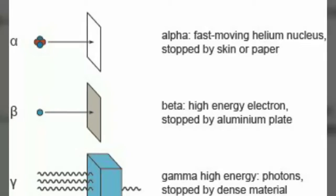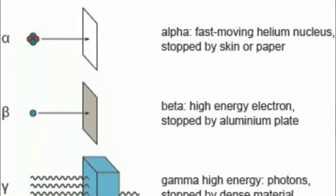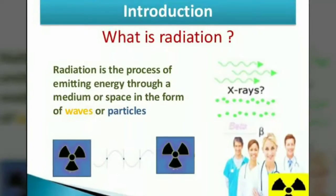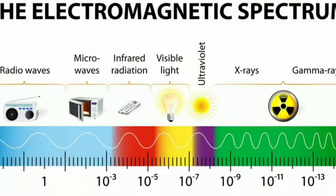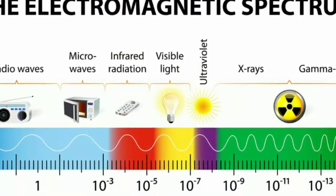but can disrupt the interatomic bonds which form molecules, thereby breaking down molecules rather than atoms. A good example of this is sunburn caused by long-wavelength solar ultraviolet.